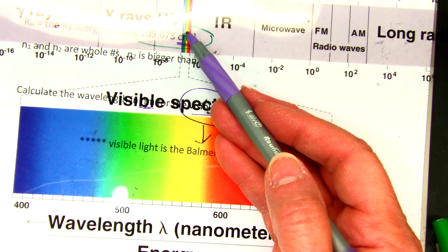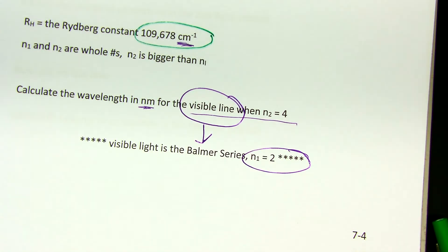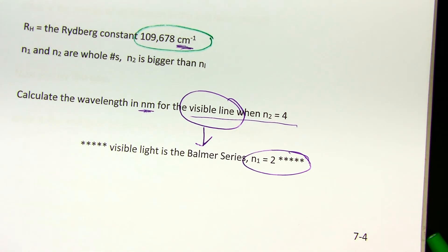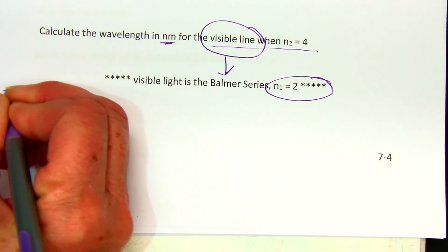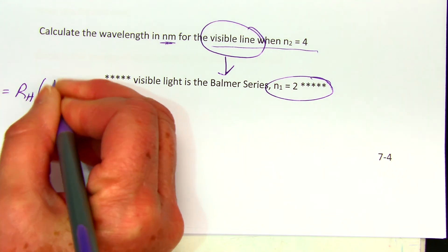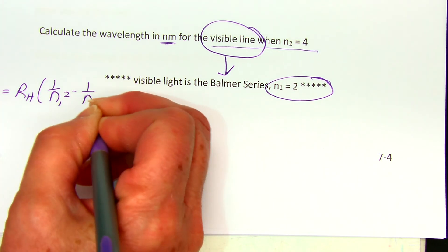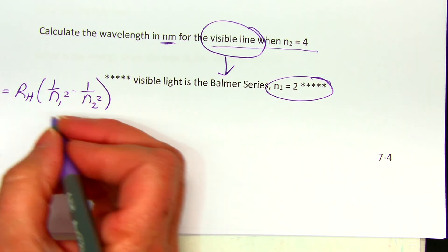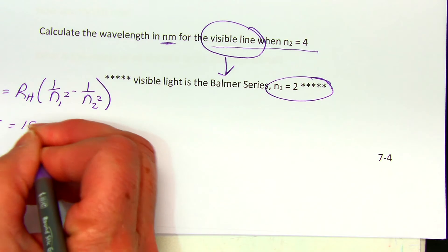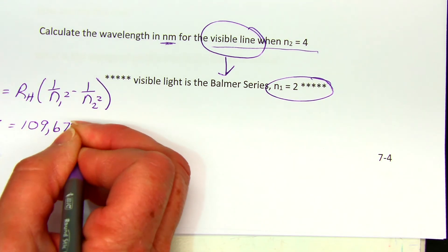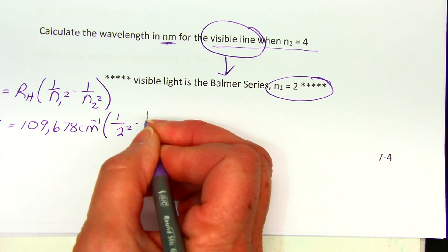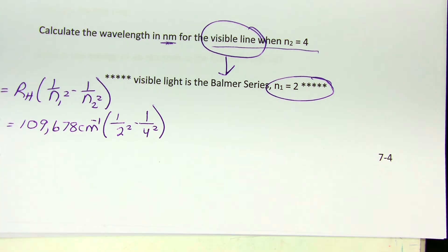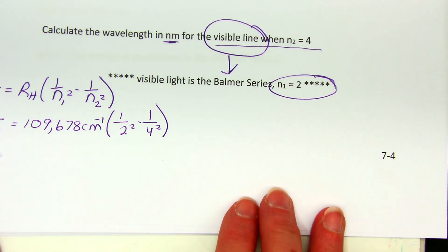In this really small little area of the electromagnetic spectrum, your n1 is always equal to 2 because those are the visible lines. We'll go ahead and all we have to do now is plug these numbers in and do a little bit of kind of messy algebra. So 1 over lambda is equal to R sub H times 1 over n1 squared minus 1 over n2 squared. Now we start plugging in: 1 over lambda is 109,678 reciprocal centimeters (centimeters to the negative 1) times 1 over 2 squared minus 1 over 4 squared.